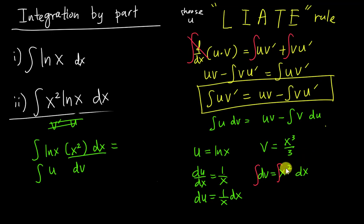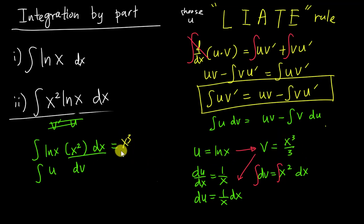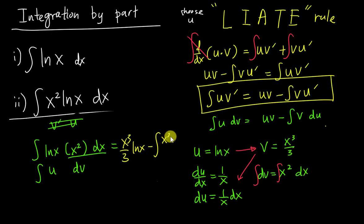Following the formula u·v minus the integral of v·du: u times v gives (x³/3)·ln(x). Then I need to subtract the integral of v times du, which is (x³/3) times (1/x). Simplifying (x³/3)·(1/x) gives x²/3.